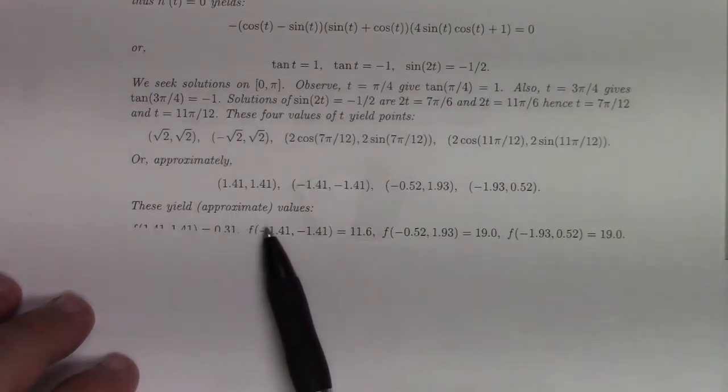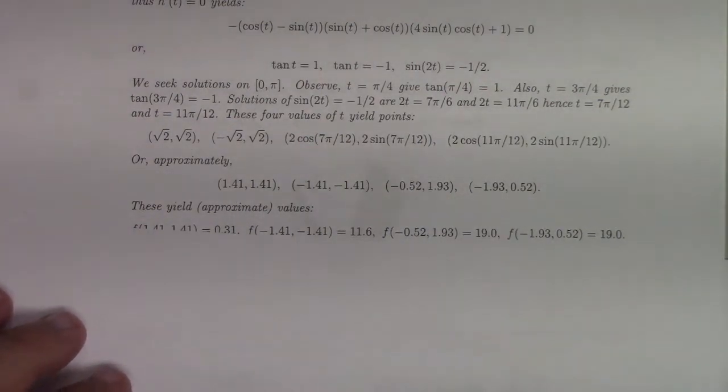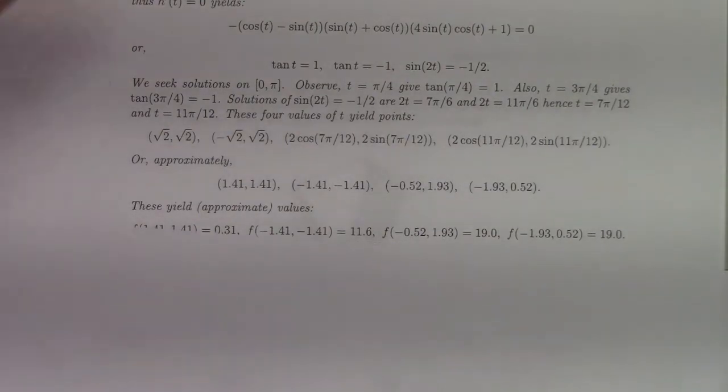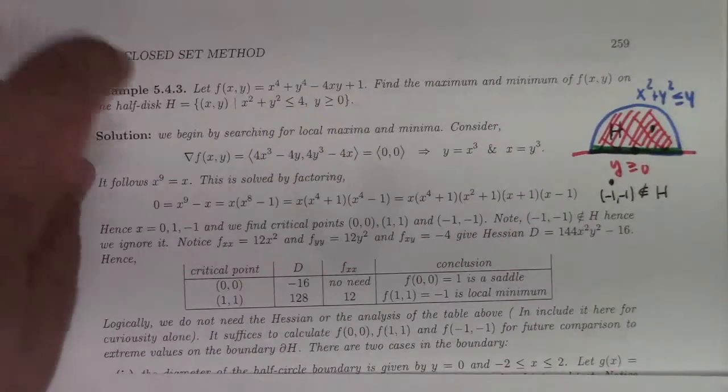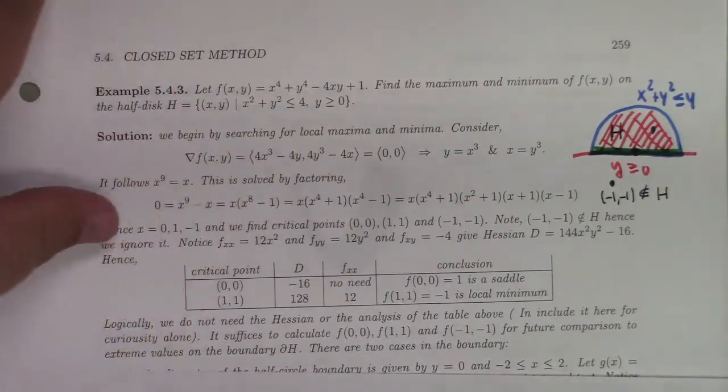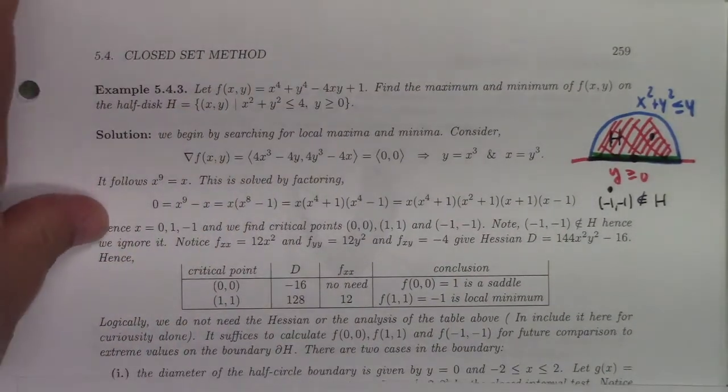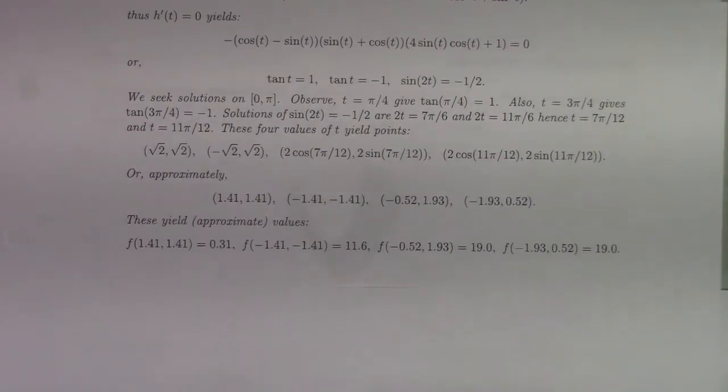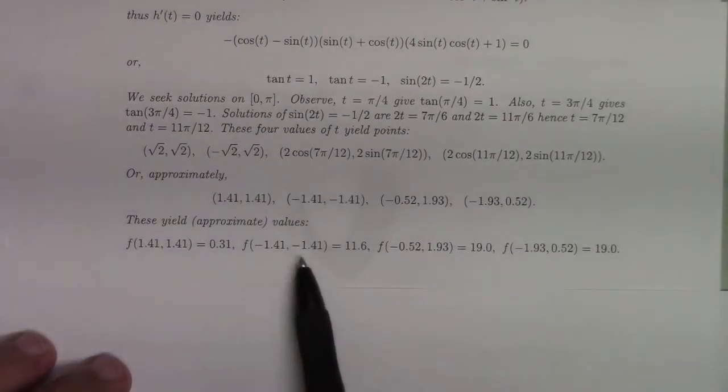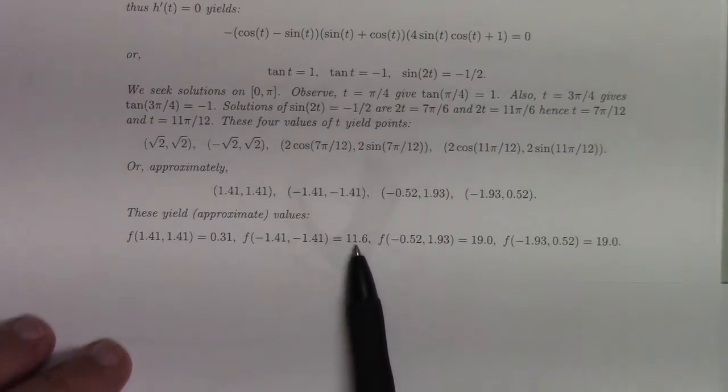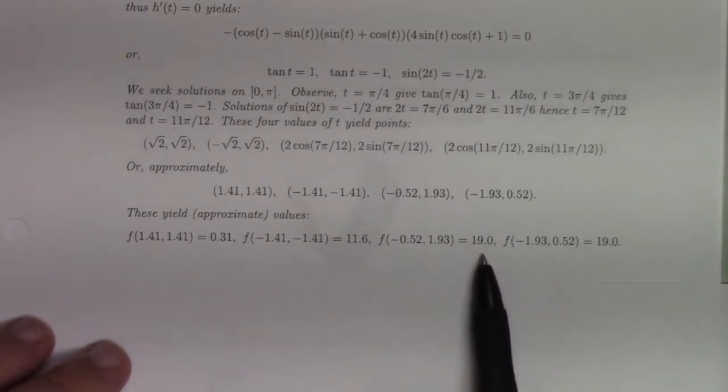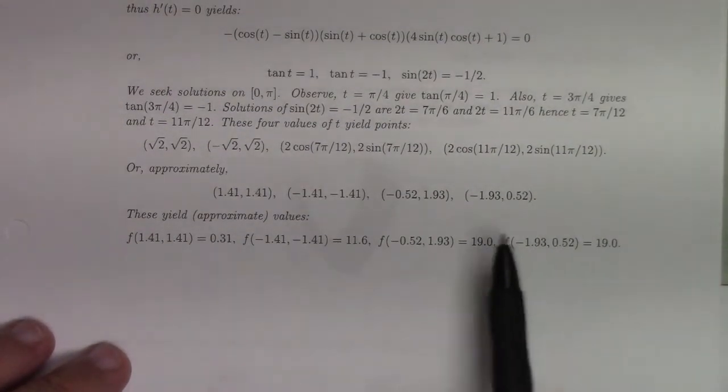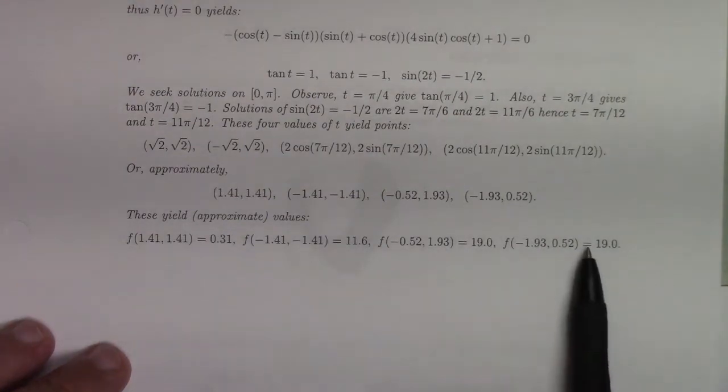When I plug those into the function we're trying to maximize—don't forget, this is the function we're trying to maximize—I get approximate values of 0.31, 11.6, 19.0. These 19's are bigger than the 17's we had before. We may have a winner.